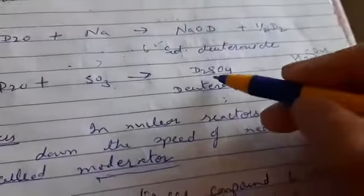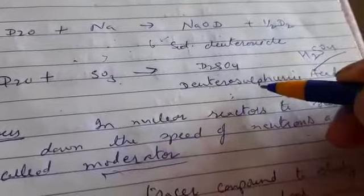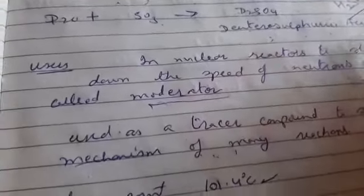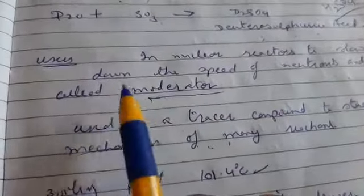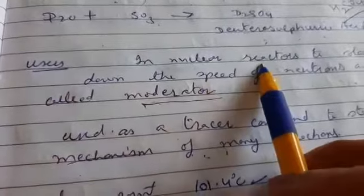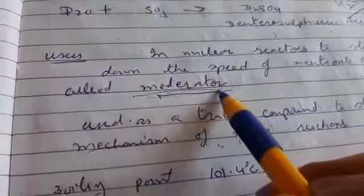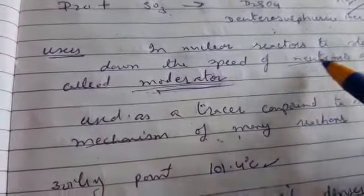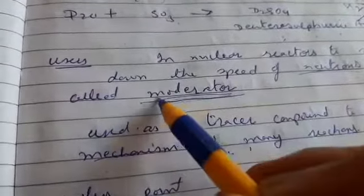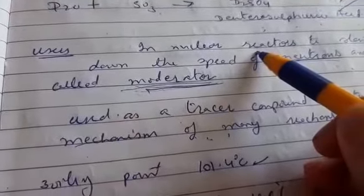The uses of heavy water: it's used in nuclear reactions as a moderator. A moderator is used to slow down the speed of neutrons, and that's why it is known as a moderator in nuclear reactions.